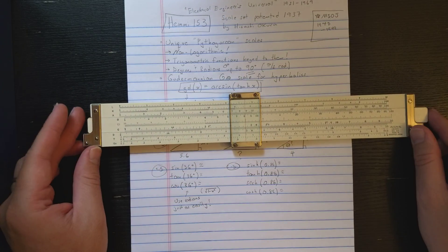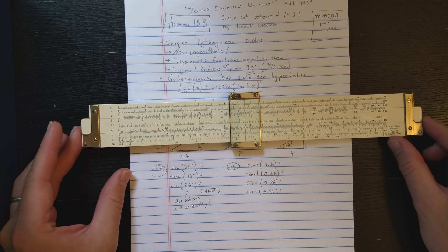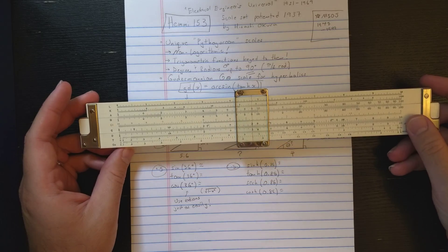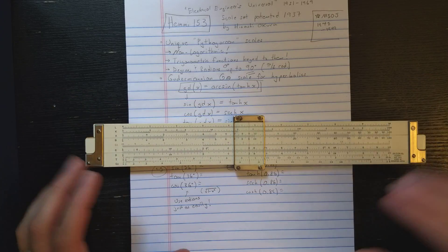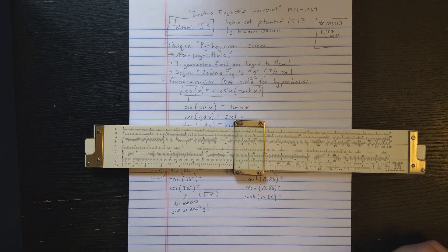So, the HEMI 153 is an electrical engineer's slide roll, and what that usually means on a slide roll is that it's going to somehow include the hyperbolic functions. So vector slide rolls, slide rolls with hyperbolic functions, are typically aimed at the electrical engineer.